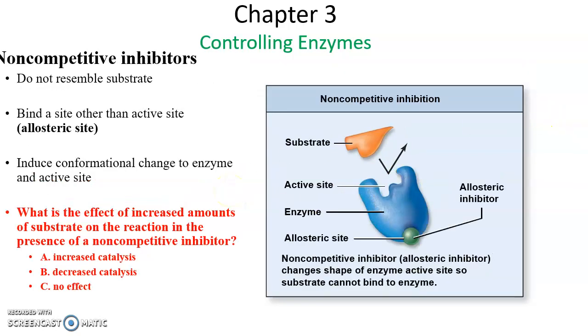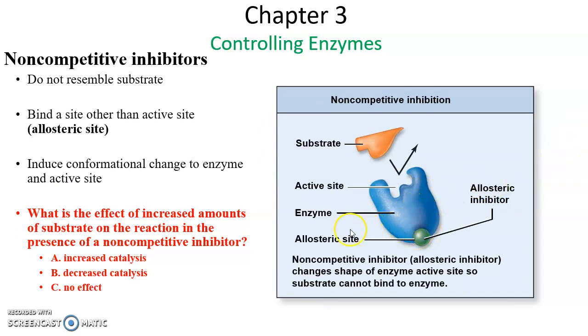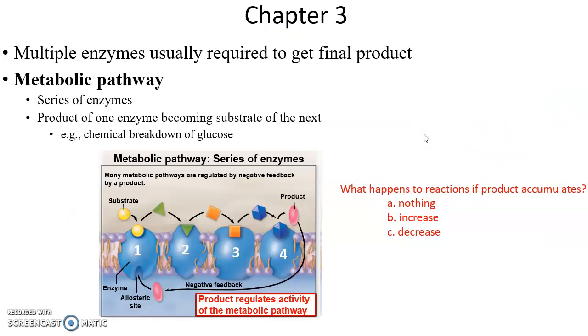Non-competitive inhibitors bind somewhere else on the enzyme. They bind to an allosteric site. When the non-competitive inhibitor binds to the allosteric site, it changes the shape of the enzyme, changing the shape of the active site, meaning the enzyme cannot function. Shape is critical to enzyme function. What would be the effect of increasing amounts of substrate in a reaction in the presence of a non-competitive inhibitor? Increased catalysis, decreased catalysis, or no effect? No effect. Adding more and more substrate has no effect on whether the non-competitive inhibitor is bound to the enzyme or not. You can add all the substrate you want, it's still not going to affect how much reaction is occurring.